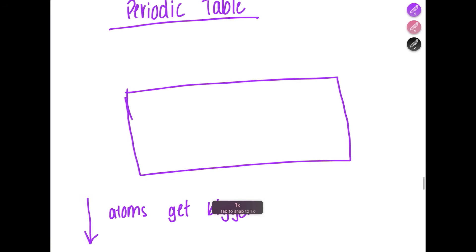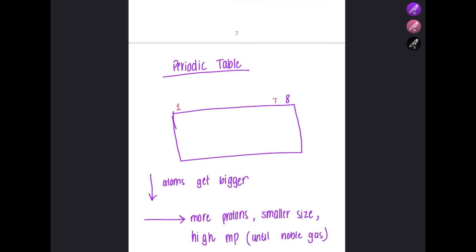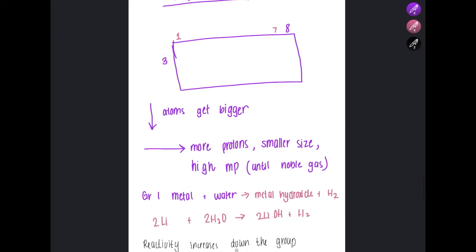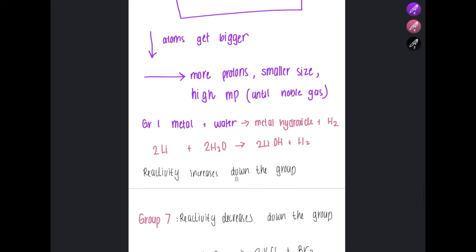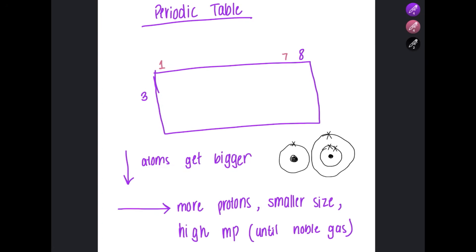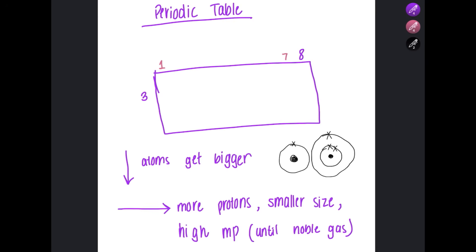In the periodic table, there are seven groups. Each group number represents the number of valence electrons — group one has one valence electron, group seven has seven valence electrons, and group eight (noble gases) have a full electronic configuration and do not react; they exist as monatomic single atoms like Ne, Ar. The periods represent the number of electron shells — all elements in the same row have the same number of shells. As you go down a group, atoms get larger because the number of shells increases.